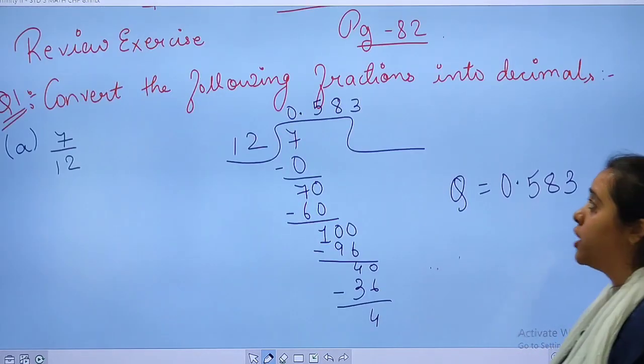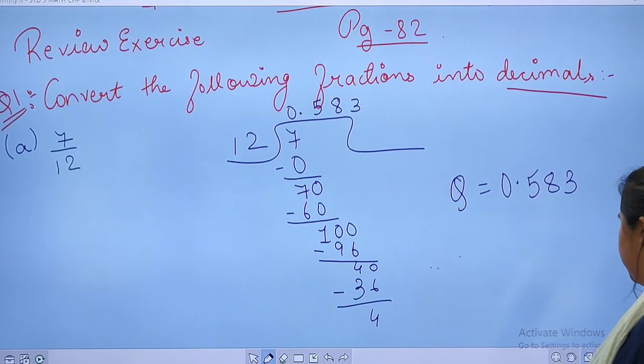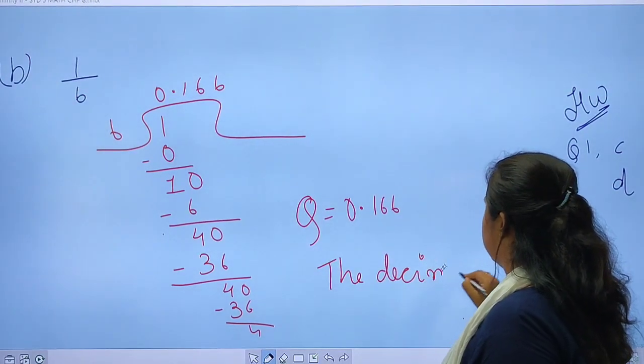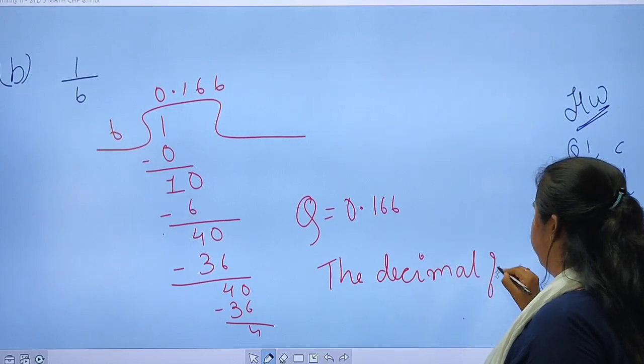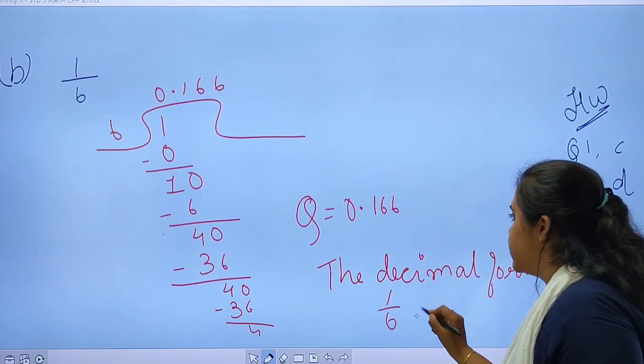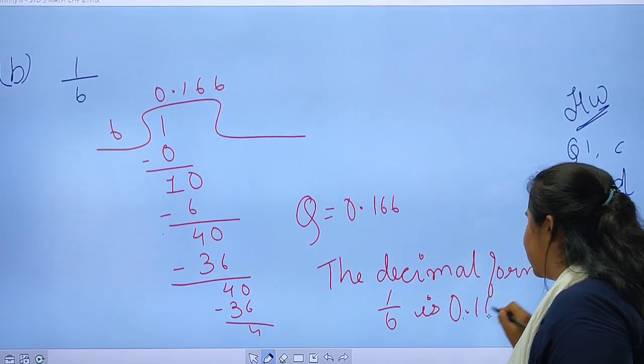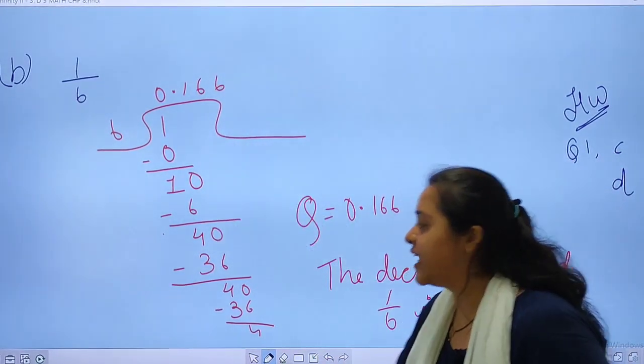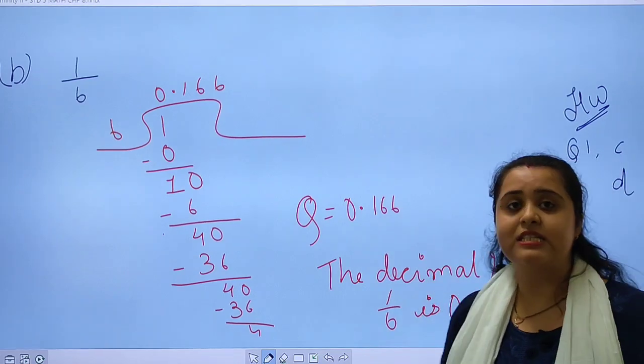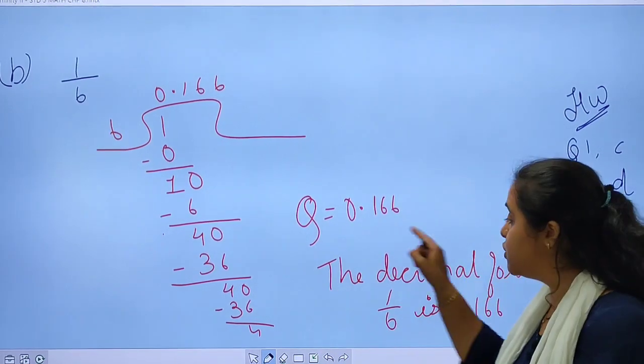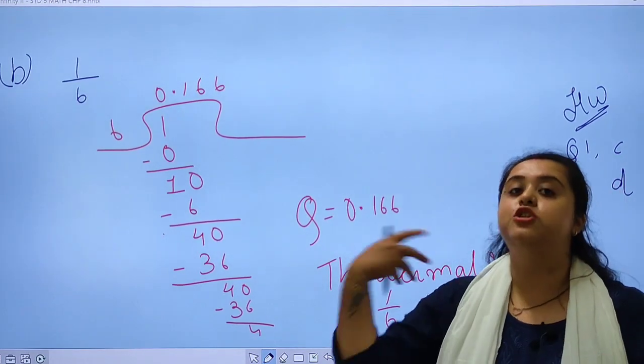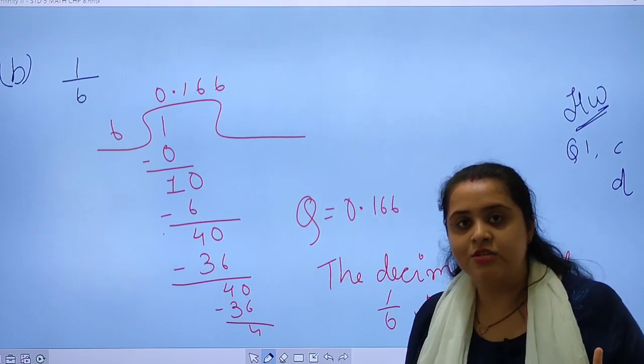If you want, you can write the answer for it. If you want, you can write it this way. The decimal form of 1 by 6 is 0.166. If you wish, you can write Q equals to 0.166, and you are supposed to mention this also. We are supposed to convert the fractions into decimal form.